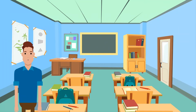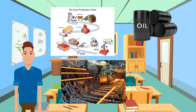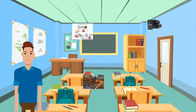Secondary industries are those that take the raw materials produced by the primary sector and process them into manufactured goods and products. Examples of secondary industries include heavy manufacturing, light manufacturing, food processing, oil refining, and energy production.